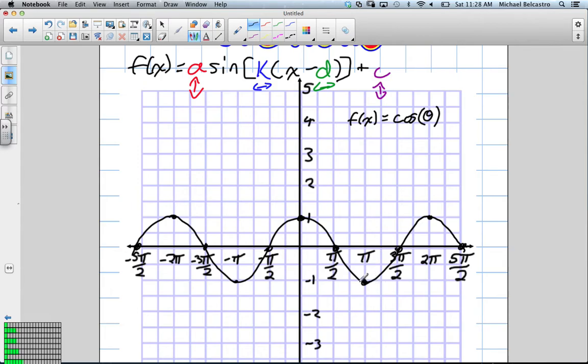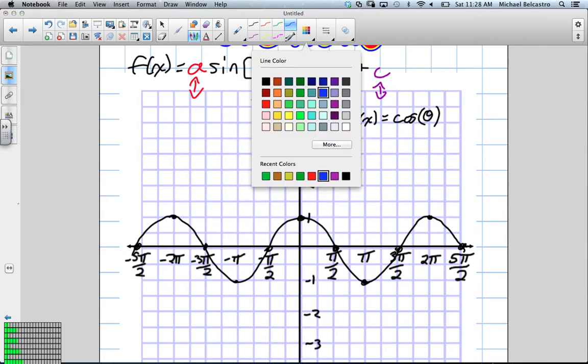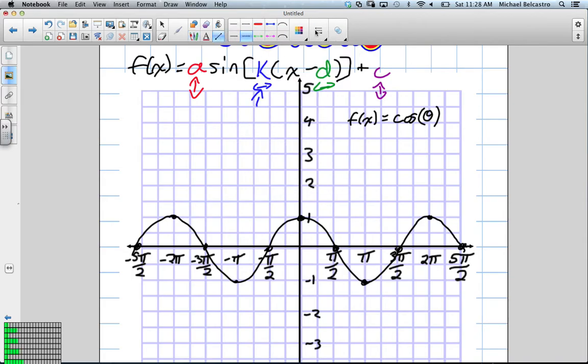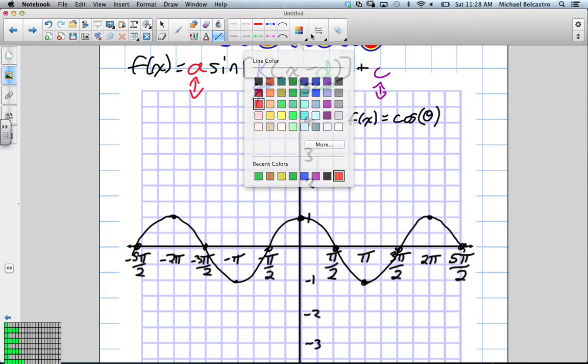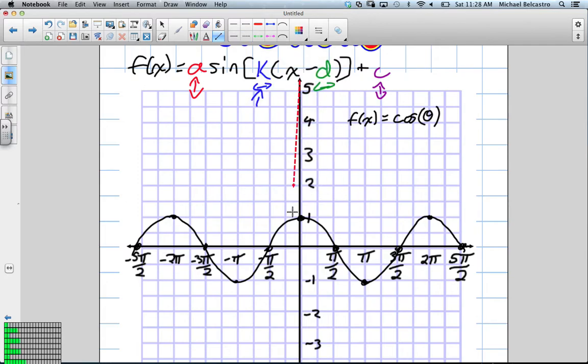They want us to write equivalent expressions to this that would represent the same graph. So one of the things we could do is, if you remember this k, k flips things on the y-axis. So k would flip something on this axis.